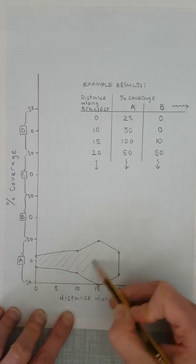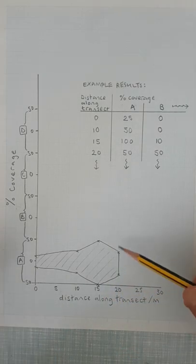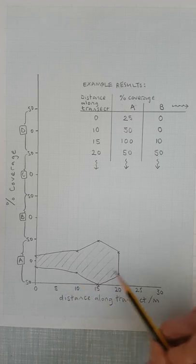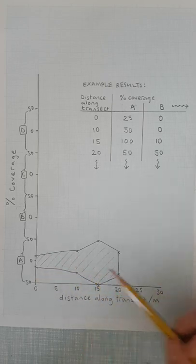And then what you can do is you can shade it or color it in, and you can get a really nice representation of the distribution of this particular species along your transect. It's a really nice visualization of how much of A is occurring along the transect.